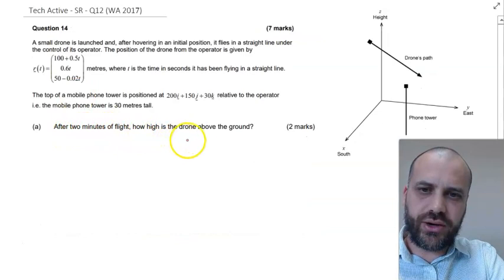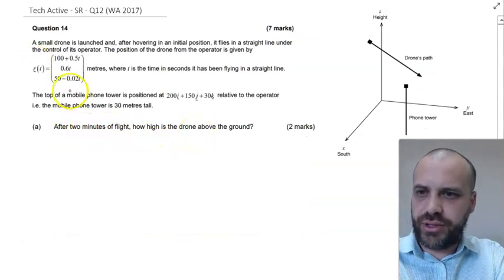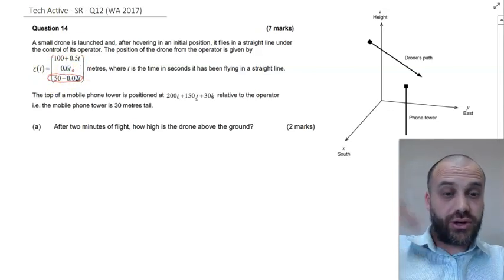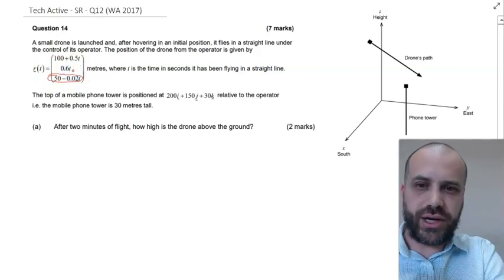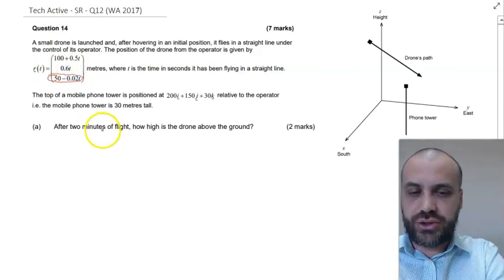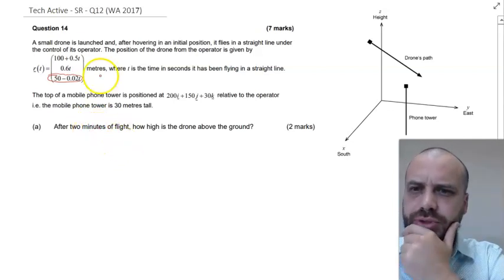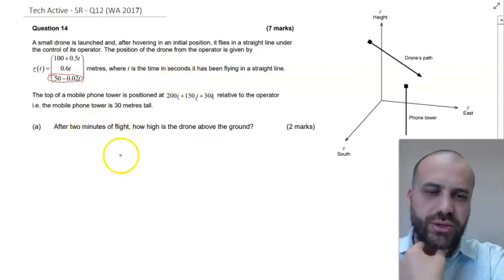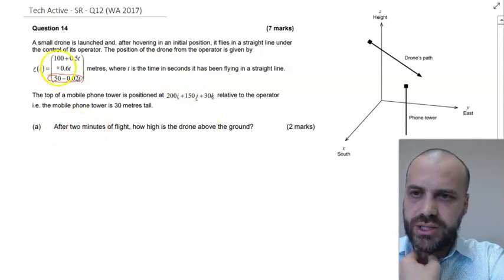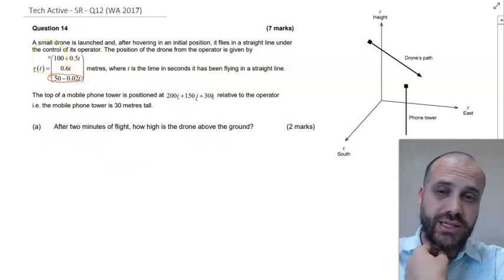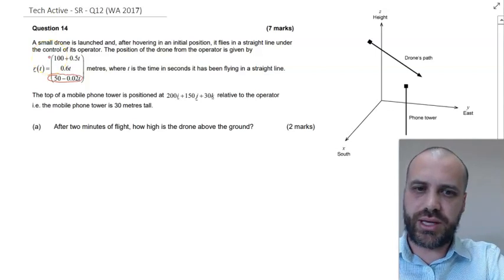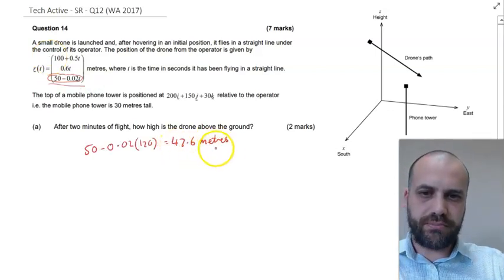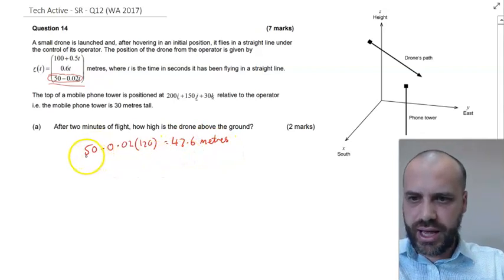After two minutes of flight, how high is the drone above the ground? This portion of our equations will tell us the height. We're subbing in 2 — but check your things here: time is in seconds. So after two minutes our time is 120 seconds — we sub 120 in, and we're 47.6 metres off the ground at that time.